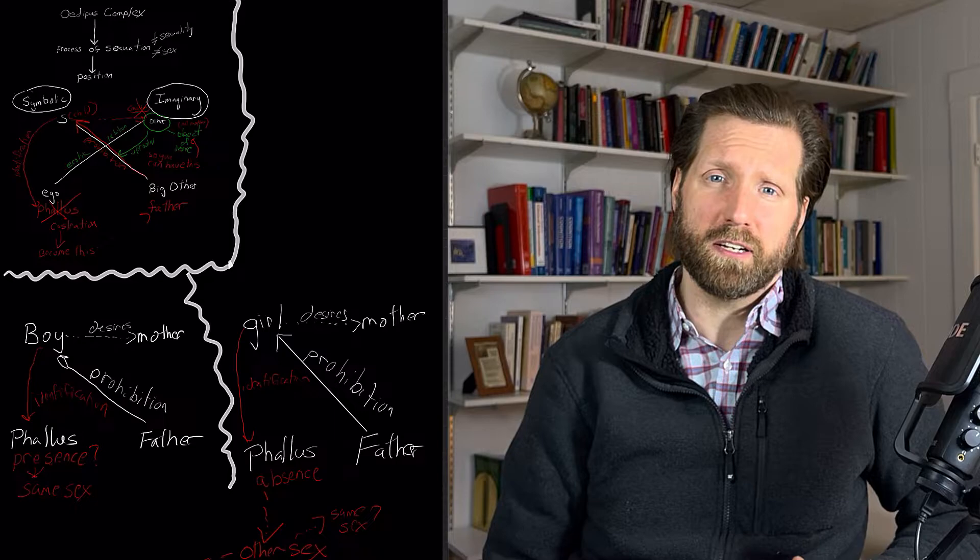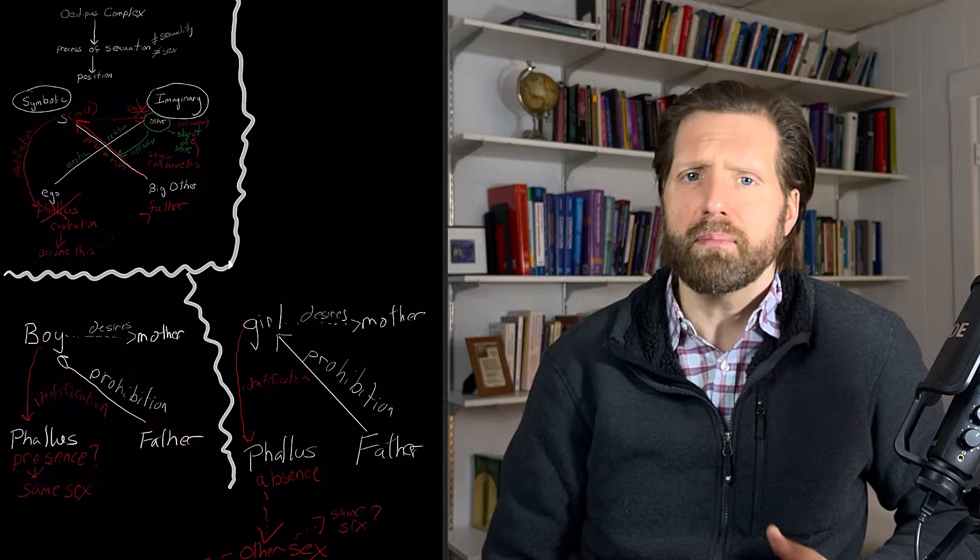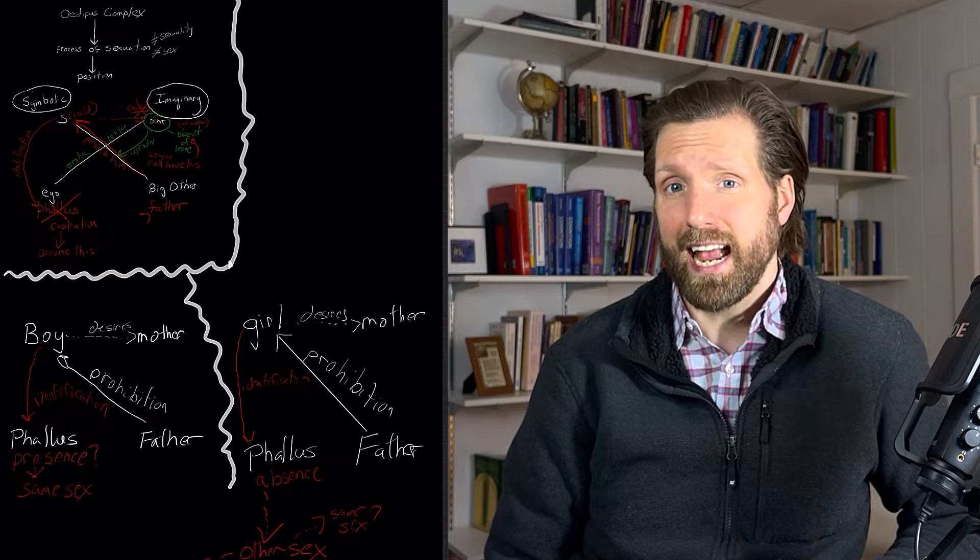There's a lot here to unpack and unfortunately we're not given a good deal to work with within the constraints of these lectures to make sense of many of these statements. It's perhaps easier to say what Lacan is not saying rather than what he is saying. First, sexuation is not a purely natural process based on anatomical differences but involves these differences as they intersect with the symbolic. Consequently, such an outcome of sexuation is not a necessary nor universal unfolding but a structural outcome within a particular constellation of the symbolic order. It's normative only in the sense that the symbolic imposes norms upon us.